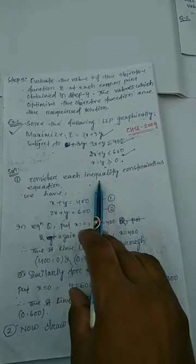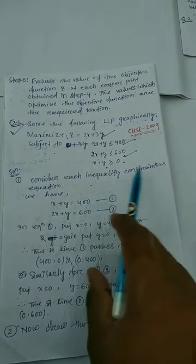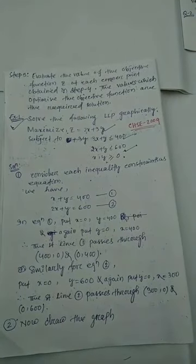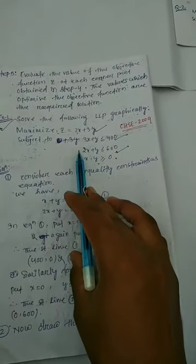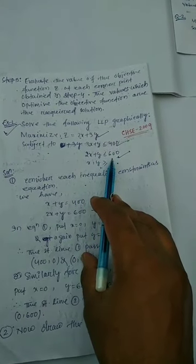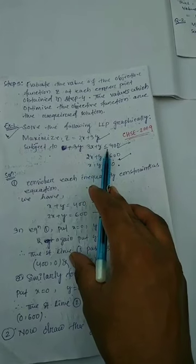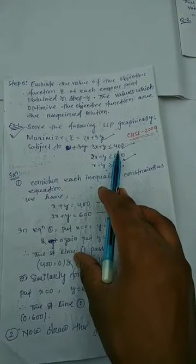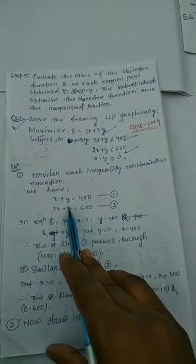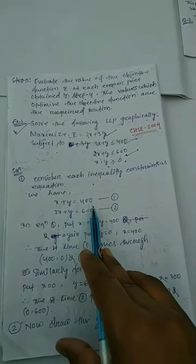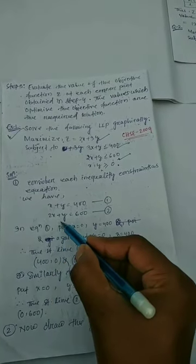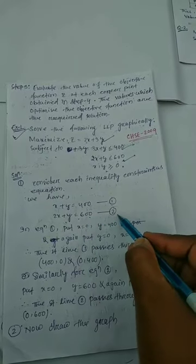Step 1: consider each inequality constraint as an equation. So 3x plus y less than or equal to 400 becomes 3x plus y equals 400 — call this equation 1. And 2x plus y less than or equal to 600 becomes 2x plus y equals 600 — call this equation 2.